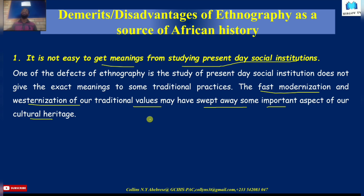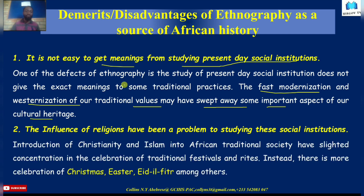Many ideas have been introduced into these ceremonies which originally were not there, introduced so as to conform to new ideas and criticisms coming towards the institution. Even our marriage rites as Africans — because of westernization, modernization, Christianity, and Islamization — have had many things added and removed. It is very difficult to understand the past because what you are learning presently is not in its raw state. It's not in its raw state, and so it becomes very difficult to get meanings from it.